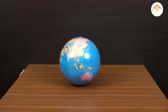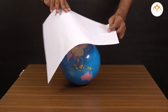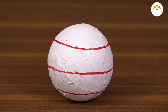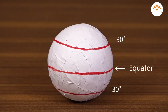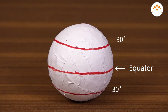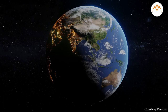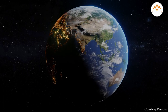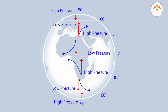Take a globe of earth and stick white paper on it. Draw an equator on it and also draw a latitude joining the north and south pole. We understand that the earth moves around herself from west to east direction. Try moving the globe in such a direction.